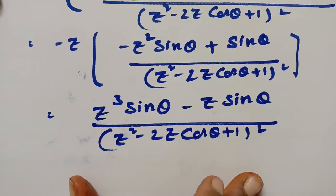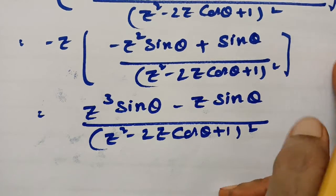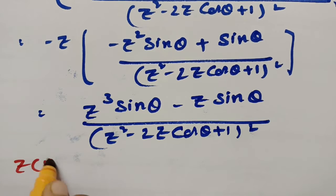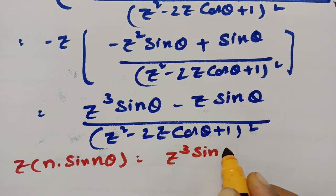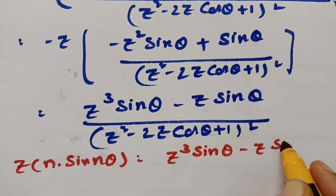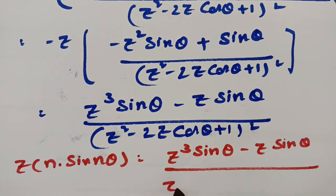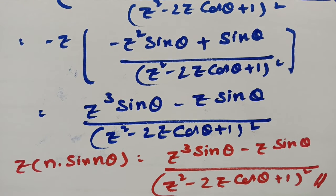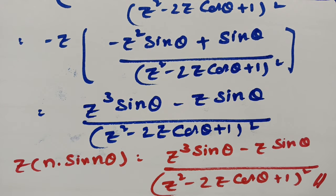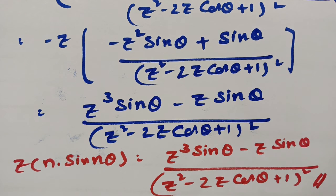Therefore, our final answer: Z transform of n·sin(nθ) is nothing but (z³·sinθ − z·sinθ) / (z² − 2z·cosθ + 1)², which can be written as z(z² − 1)·sinθ / (z² − 2z·cosθ + 1)². This is how we solve using multiplication by n — take the derivative with respect to z once and multiply by minus z. Please practice well and you can solve these by yourself. If you liked this video, please share it with your friends. Thank you so much.